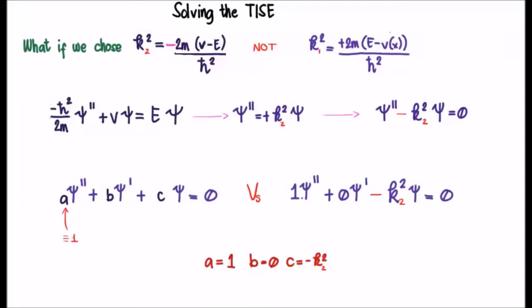Hello. So far what we've done is solved the Time-Independent Schrodinger Equation where we defined all of the constants in this fashion here, and we call them k₁ squared.